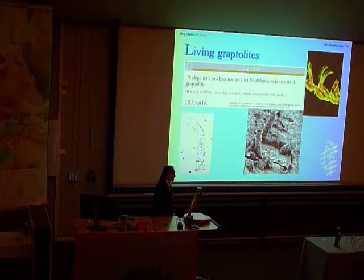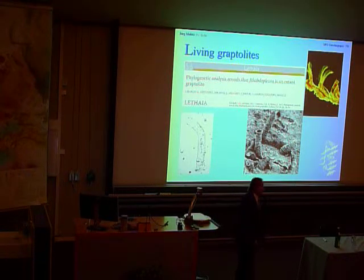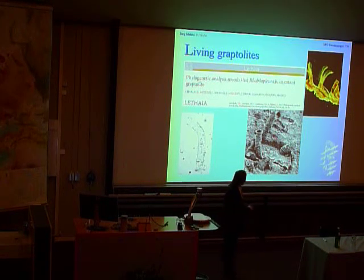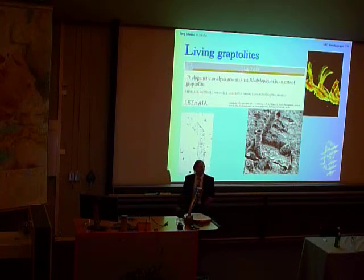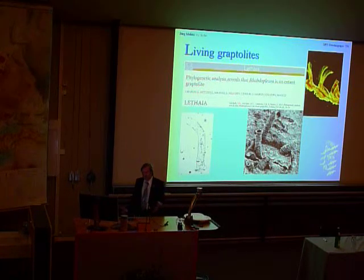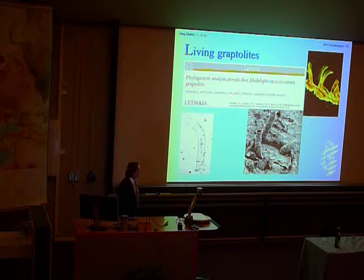If you look at recent literature, we suddenly find ourselves in a situation where we actually have living graptolites like Rhabdopleura. Rhabdopleura is a tiny little extant organism, a colonial organism found in all marine environments, and we now know that this is a graptolite.